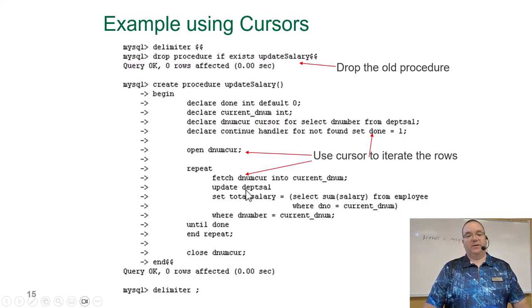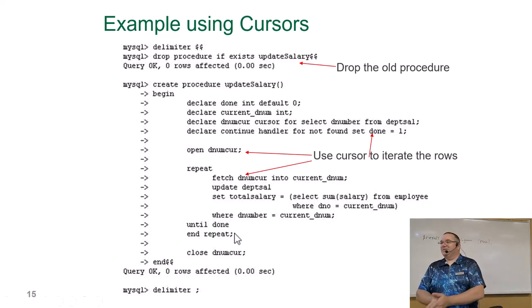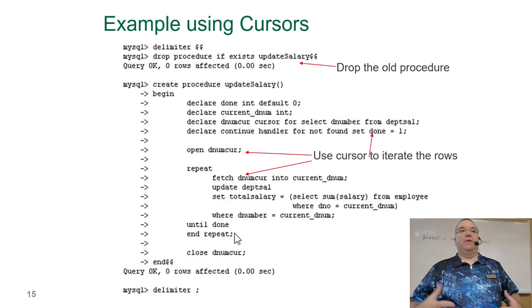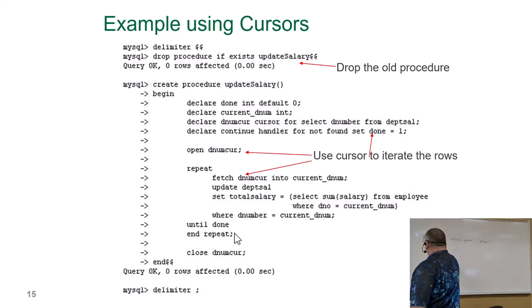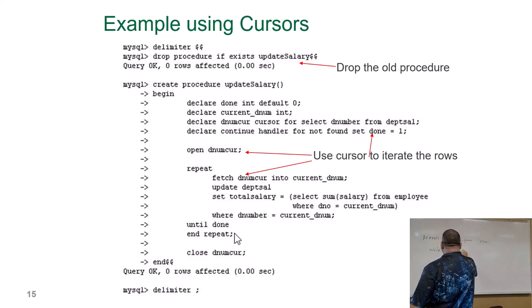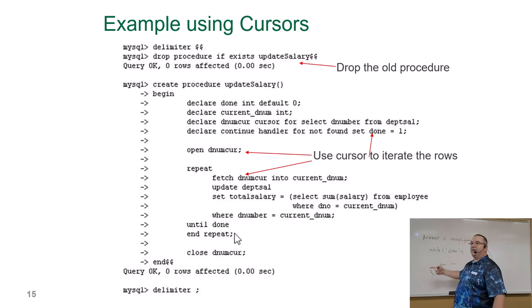It grabs the next department, updates that one. We know there are three — it'll loop. It'll go FETCH dnum — oh, there's nothing left. The error kicks off, sets done equal to one. Then it says the loop is complete. This would be the equivalent of pseudocode: WHILE NOT done, do something, and eventually done equals true and it breaks out of the loop. Same idea, just written differently.